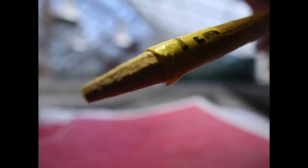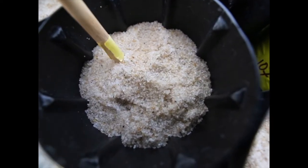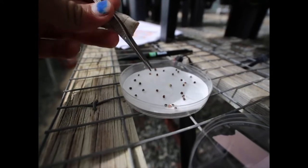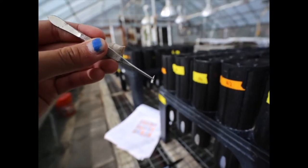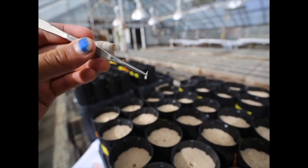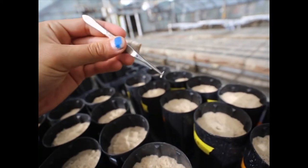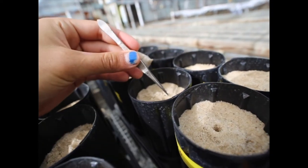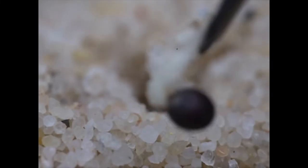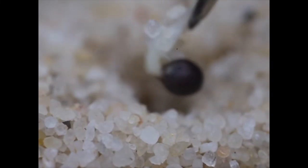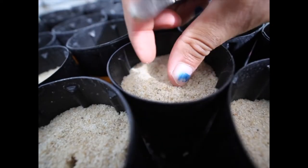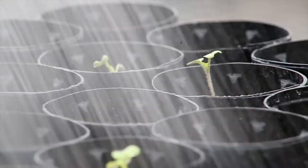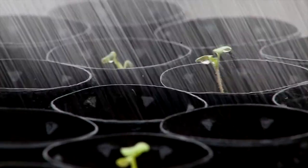Germinated seeds were then planted at a depth of one centimeter. We irrigated the plants three times a day and fertilized them three times a week.